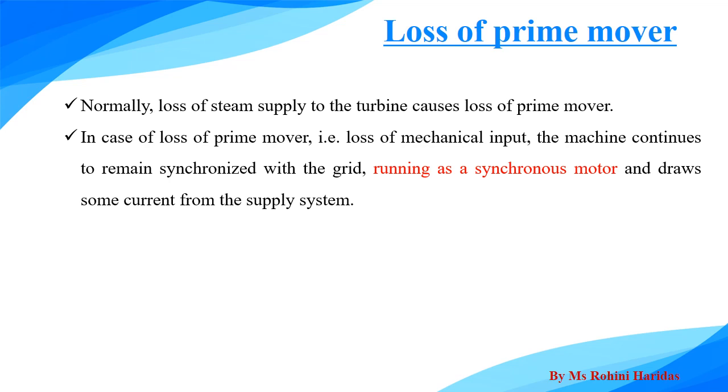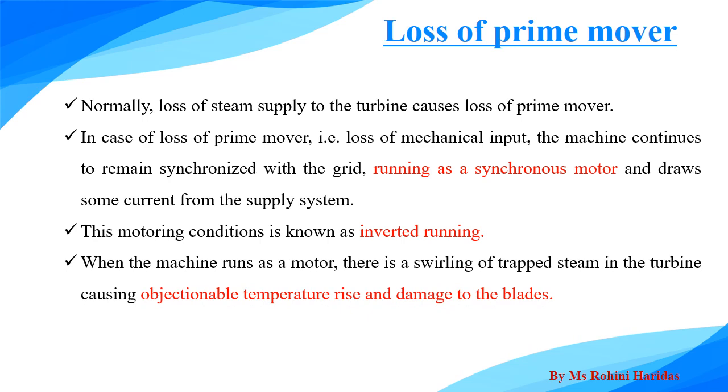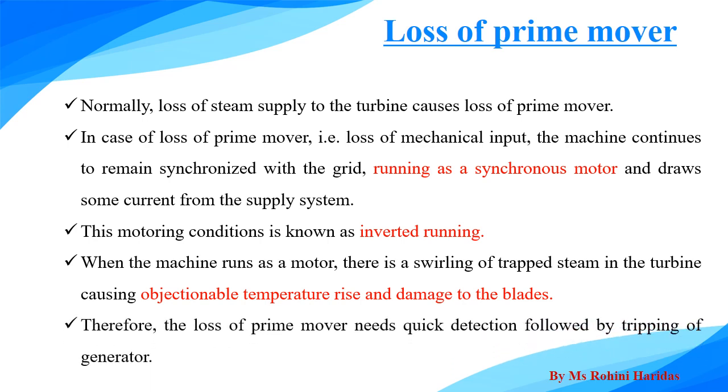The meaning is that instead of supplying energy to the power system, it will take the energy from the power system. When the machine runs as a motor, there is a swirling of a trap stream in the turbine causing objectionable temperature rise and damage to the blades. Therefore, the loss of prime mover needs quick detection followed by tripping of the generator. The reverse power relays are used for the protection against the loss of prime mover.